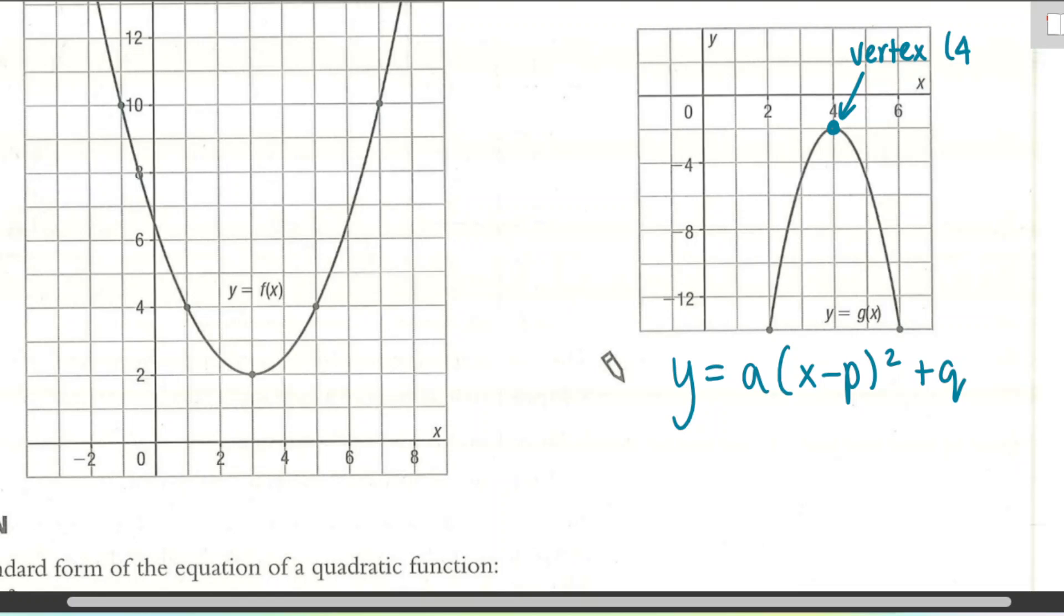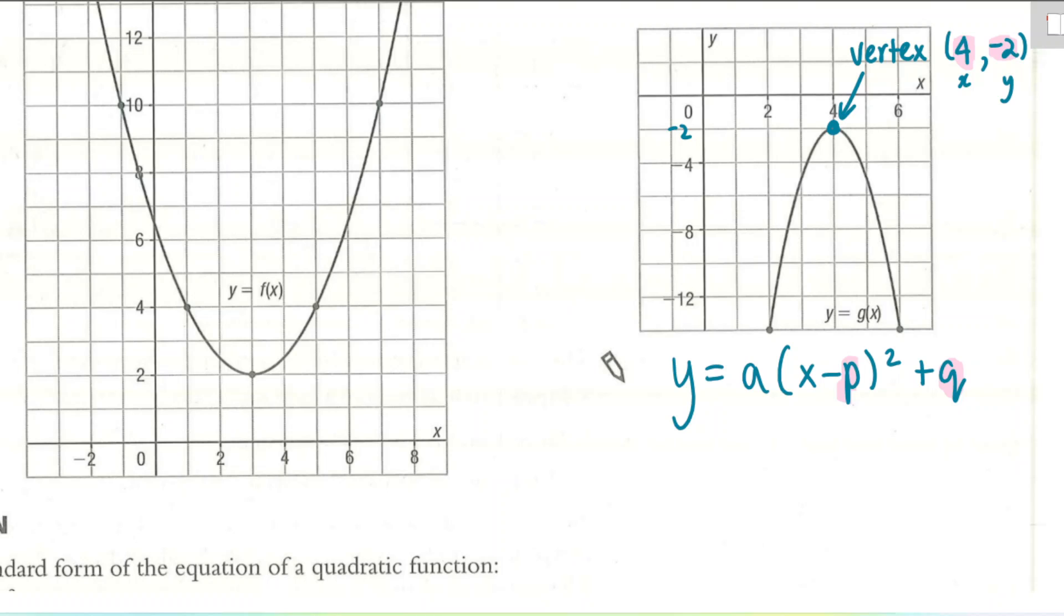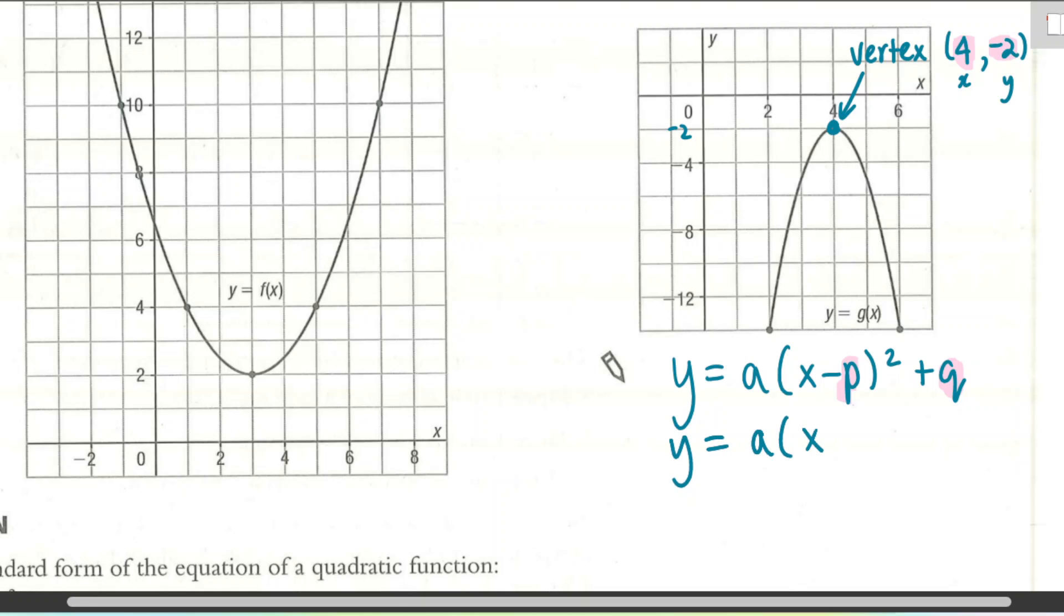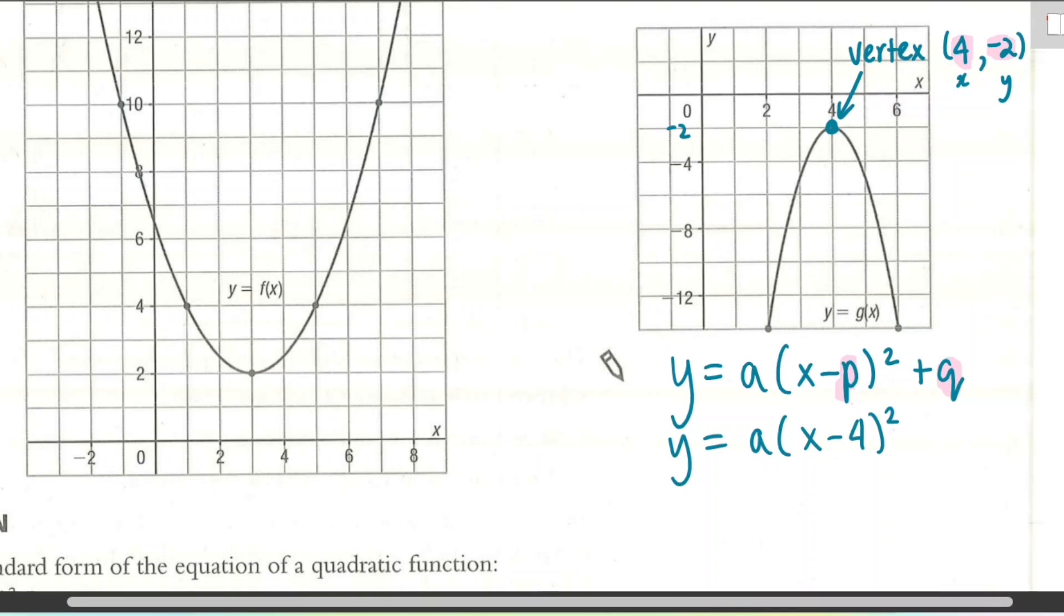x is right here at 4 for the x-coordinate and the y-coordinate is negative 2, halfway between 0 and negative 4 on the y-axis there. So those are the values that I'm going to go ahead and put into where P and Q are in the equation format. Let's go ahead and do that. So I have y equals A, x minus 4, all squared. I do plus negative 2, but it's a little bit cleaner just to write minus 2. So I went ahead and plugged in those vertex coordinates into the equation.